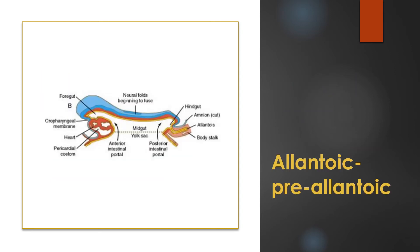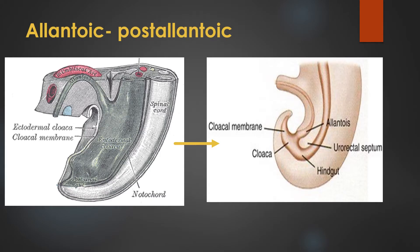In the allantoic part, it has a pre-allantoic and post-allantoic part. The pre-allantoic part, proximally, is continuous with the midgut. This midgut is connected to the hindgut through the posterior intestinal portal. The post-allantoic part is connected to the dilated part of the hindgut and it becomes the endodermal cloaca.